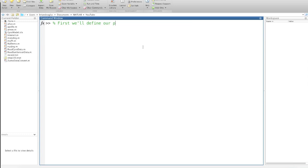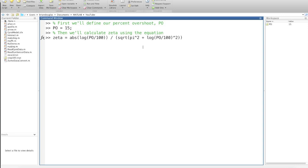The first thing we should do is define our percent overshoot variable PO and set it to 15%. Then we'll use that percent overshoot to solve for ζ using the equation I wrote earlier. One thing in MATLAB that might confuse you if you're not used to it is that the natural log, which is normally ln, is just written as log, and it's the function log10 if you want to use the base 10 logarithm. Alright, so we found our damping ratio ζ to be just over 0.5.